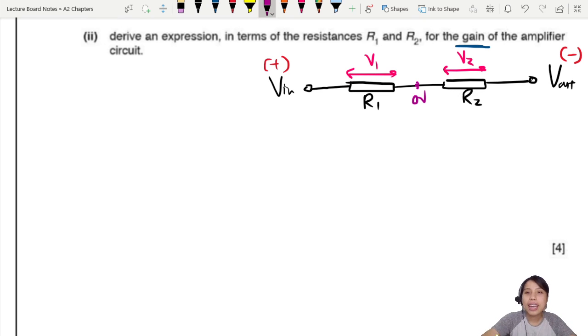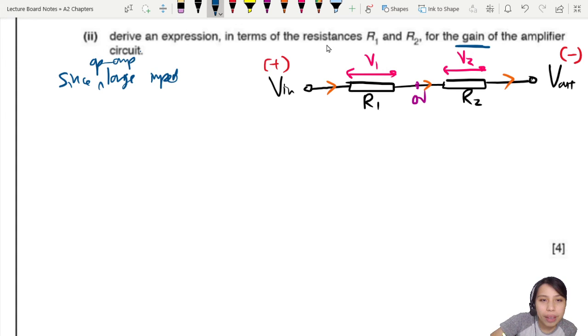Don't forget in the middle is zero volt - virtual earth. And current, if you assume V_in is positive, current will flow from high to low potential. So we start off with the current. Since the op-amp has a large impedance, what can we say? Except, not you're welcome. But I_in equals to I_feedback. Or in other words, I1 equals to I2. But never mind, we call this I_in and the other one I_feedback.